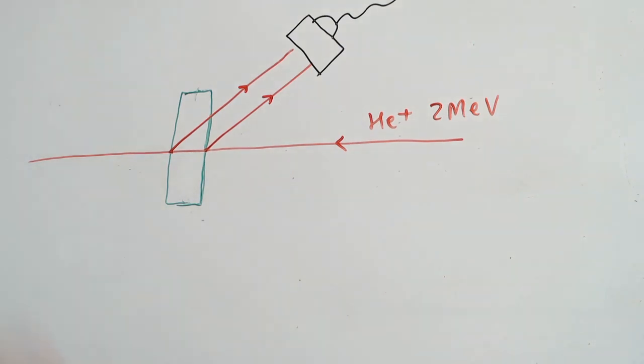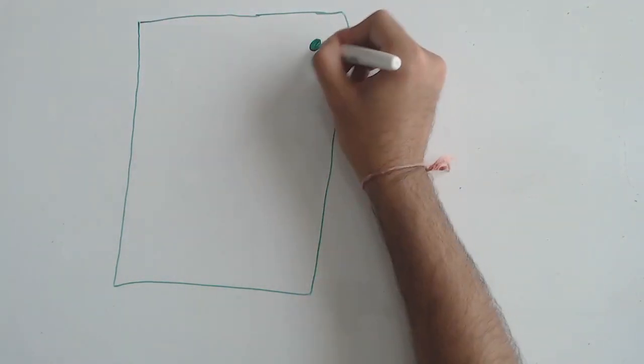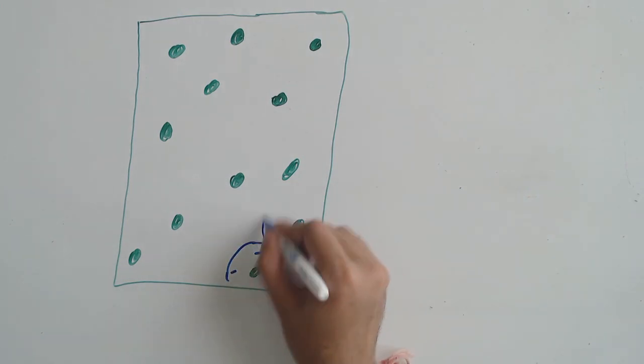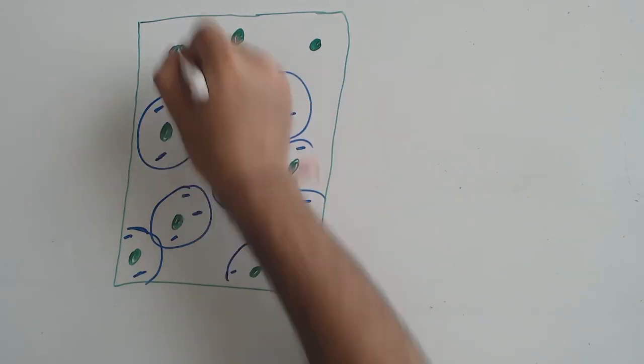The idea is that as the projectile traverses into the target, the interactions with the electron clouds slowly bleed away the energy from the projectile.